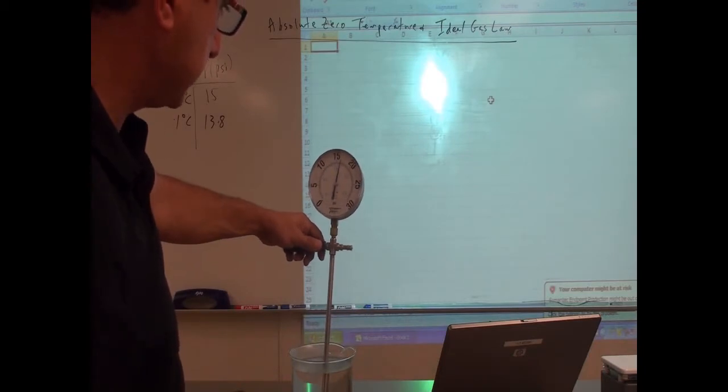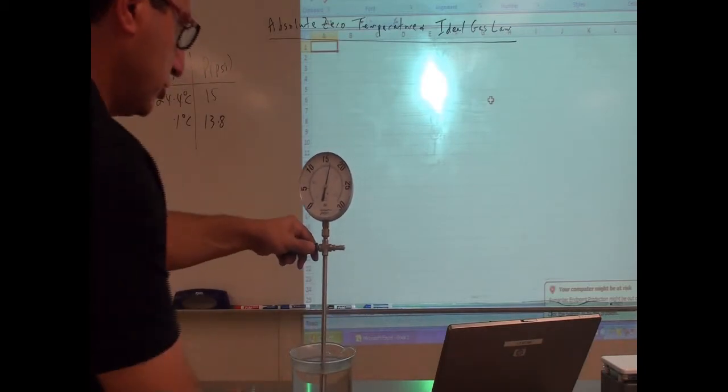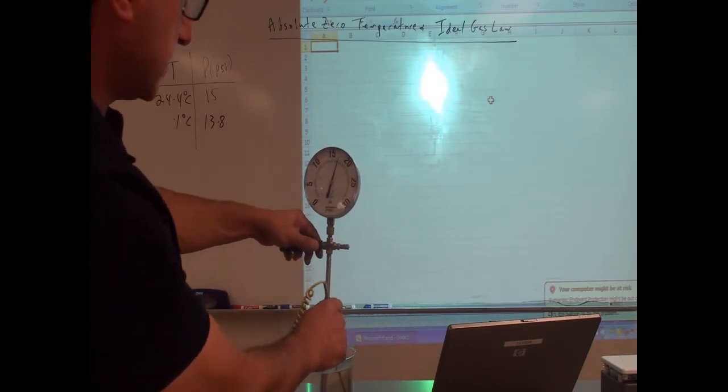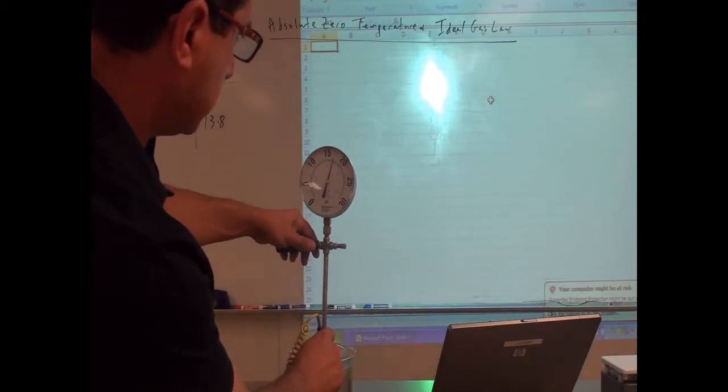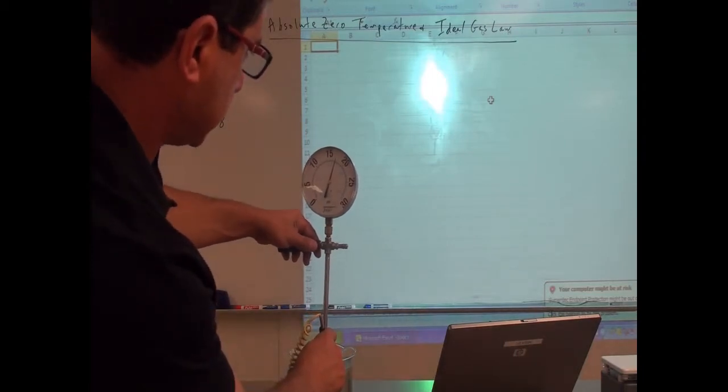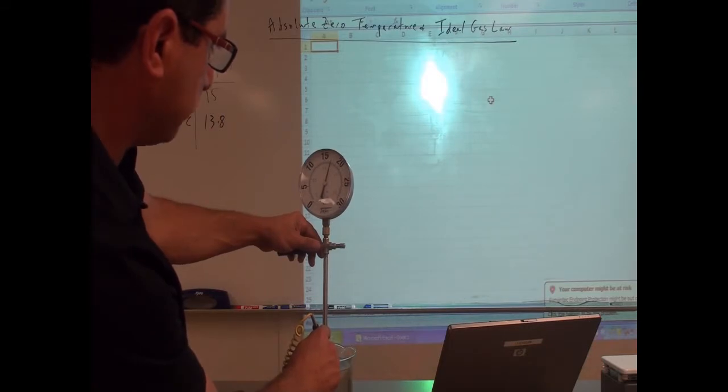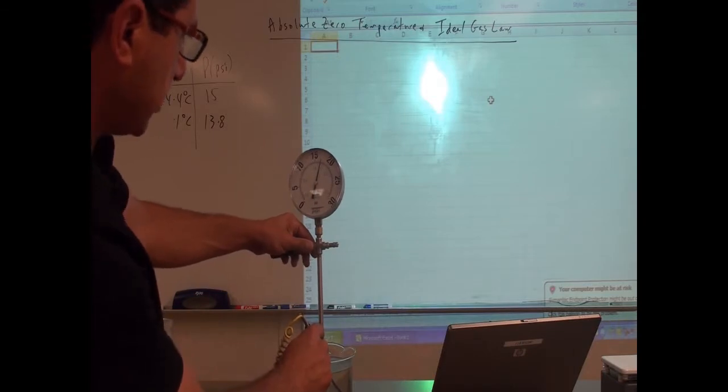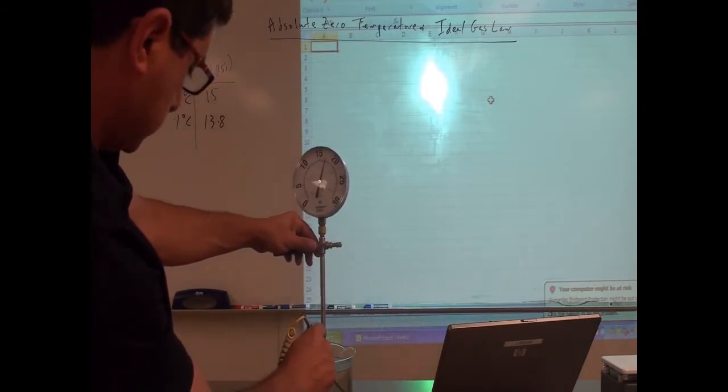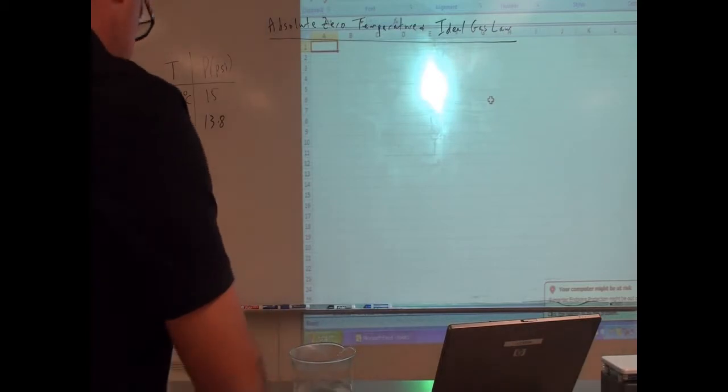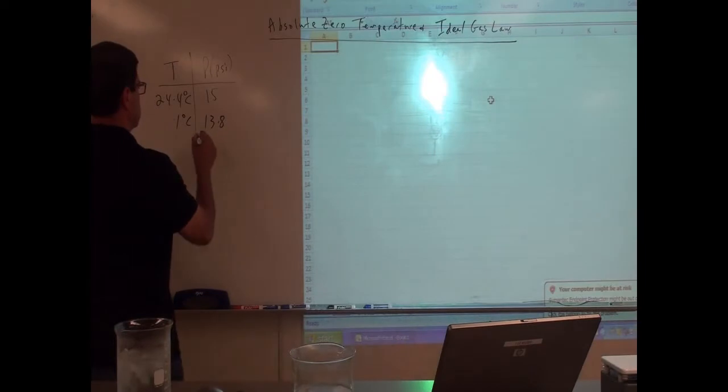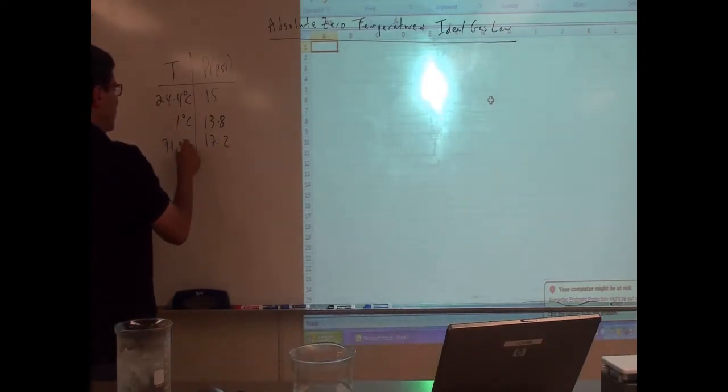So the pressure should go up. And so what I'm going to do, at the instant that I record the pressure, I'm also going to record the temperature. So that's going to be right there. The pressure is 17.2 and the temperature is 71.9. 17.2, 71.9. And then we have a 71.9 Celsius.